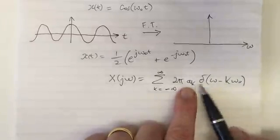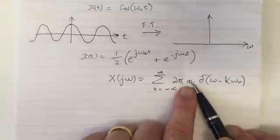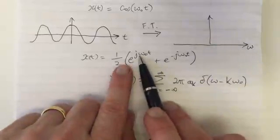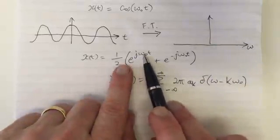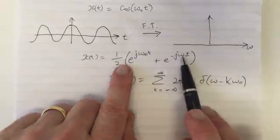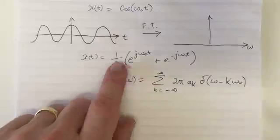This is a summation of delta functions located at these points. For k=1 and k=-1, these delta functions exist. All other delta functions for other values of k are multiplied by zero. We only see ω₀ and -ω₀, which correspond to k=1 and k=-1. These are the only values of k that exist.